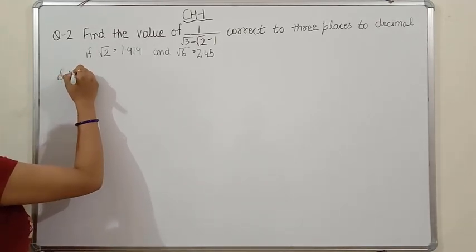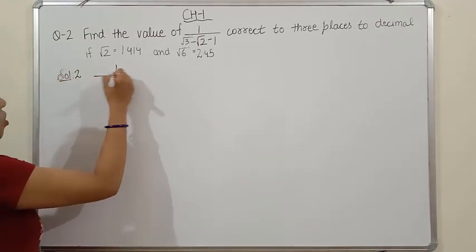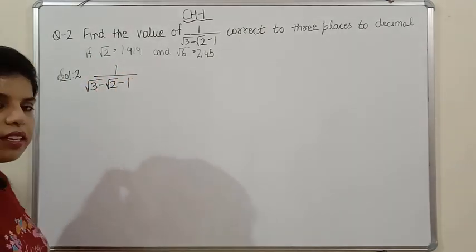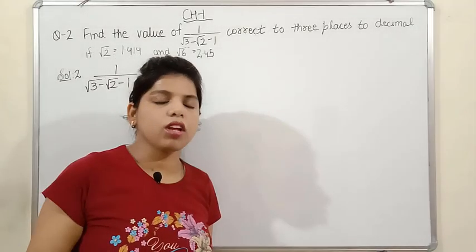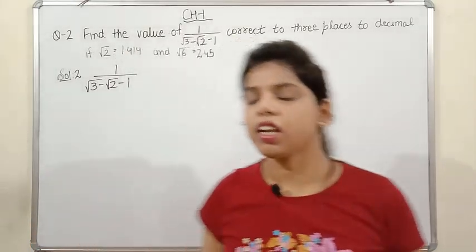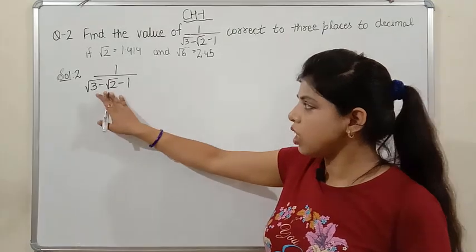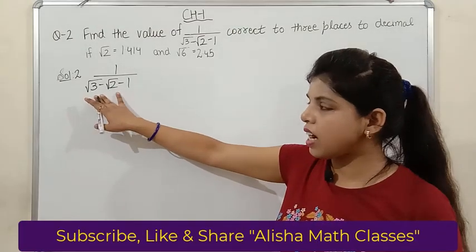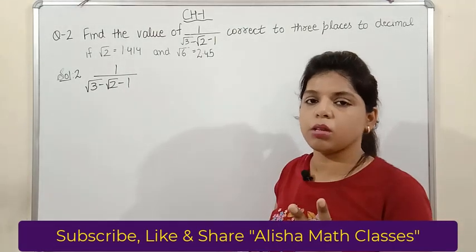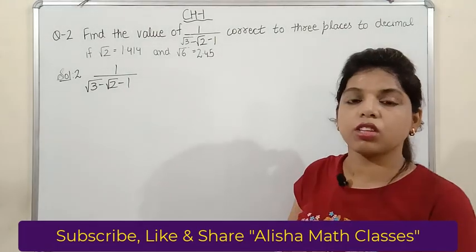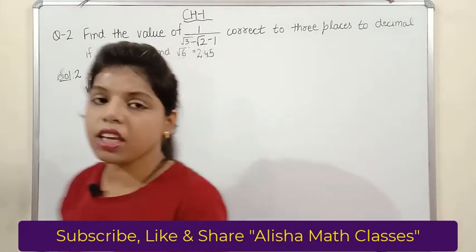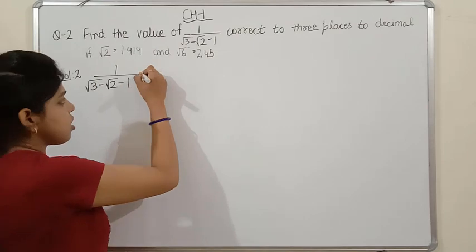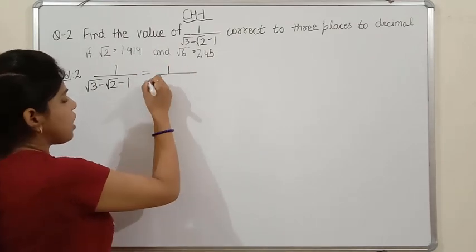Solving equation 2: it is 1/(√3 - √2 - 1). Here the denominator contains irrational numbers, so we rationalize. But the problem is that in rationalizing we normally have two terms, but here we have three terms. So how do we handle this? This is a new concept — this type of question is not even in the NCERT textbook.